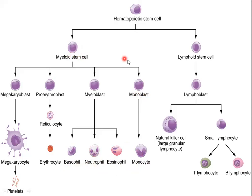Natural killer cells, also called large granular lymphocytes, come from the lymphoblast, which is a rapidly dividing cell. Lymphoblasts differentiate into natural killer cells and small lymphocytes. The small lymphocytes are T lymphocytes and B lymphocytes. Lymphoblasts come from the lymphoid stem cell. Both the myeloid stem cell and lymphoid stem cell originate from the hematopoietic stem cell.